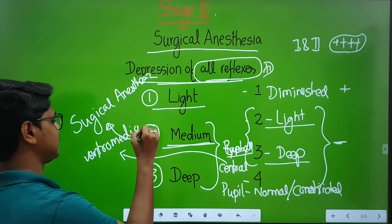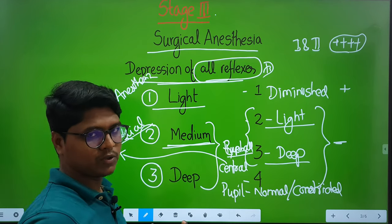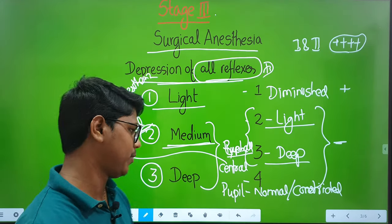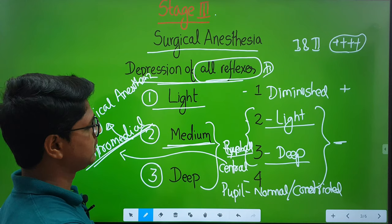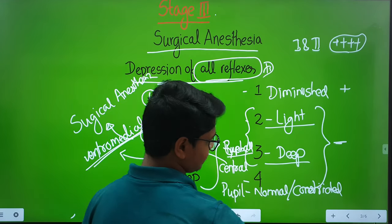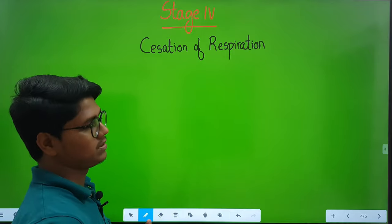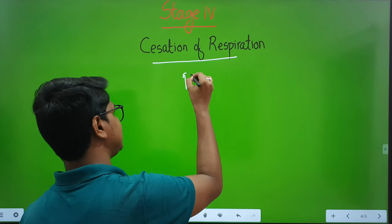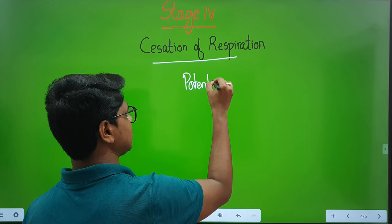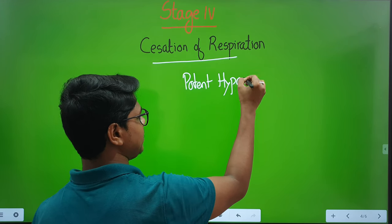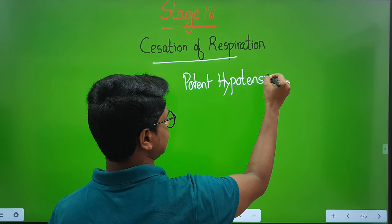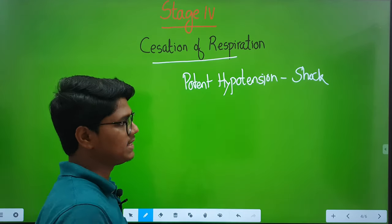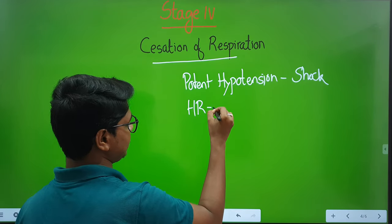Remember the ventromedial position of the eyeball — it is asked many times and you will check for it. This is all about Stage 3. Now Stage 4: in Stage 4, everything ceases. There will be cessation of respiration and profound hypotension. Blood pressure will be very low — it may enter into shock level. Respiration starts to cease. Heart rate is minimal and sometimes ceases also.